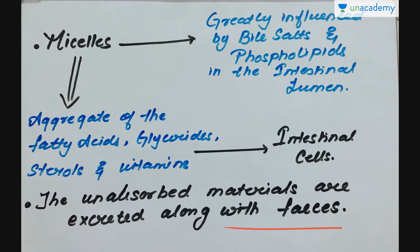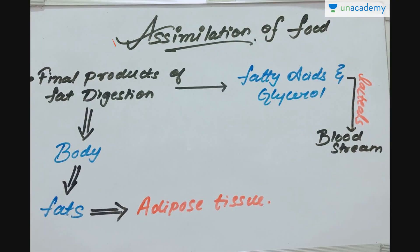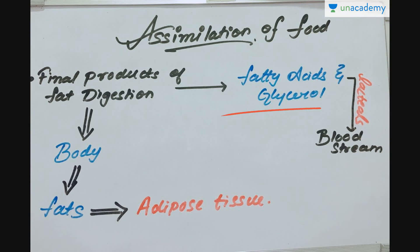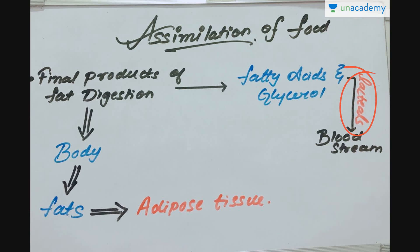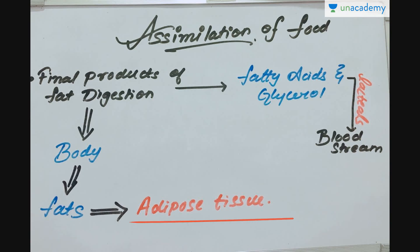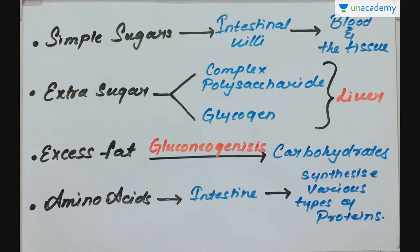Regarding the assimilation of food in the body: the final products of fat digestion are fatty acids and glycerols. These substances are absorbed into the bloodstream through lacteals. In the body, they are again converted into fats and stored in adipose tissue. This stored fat can be utilized by the body when there is greater metabolic need, at which point fat is broken down into fatty acids and glycerol by the action of lipases.